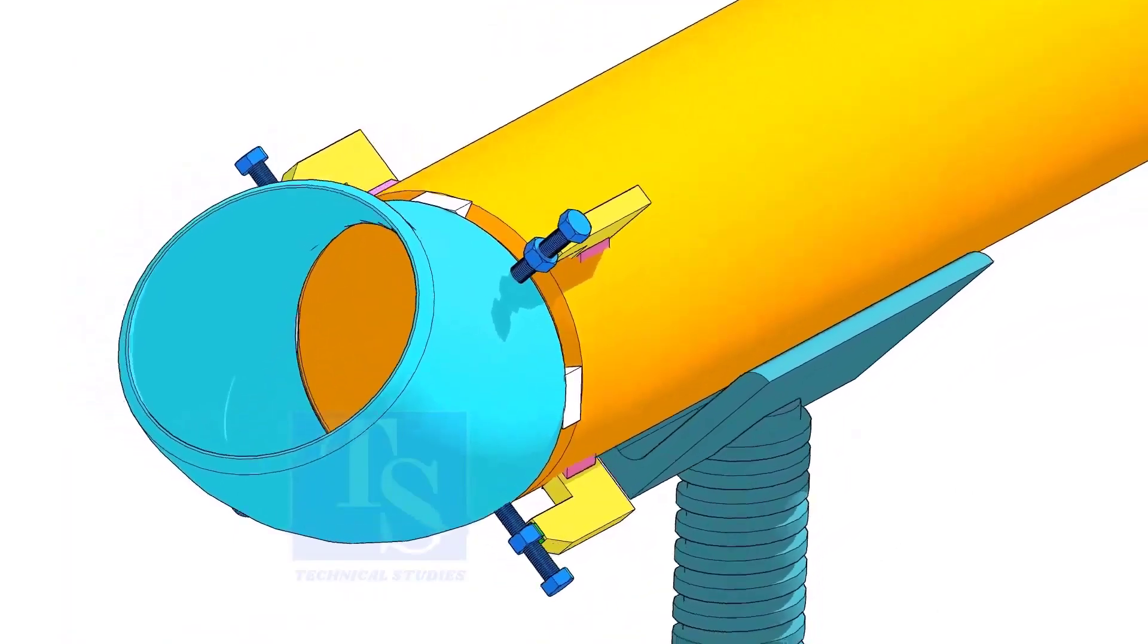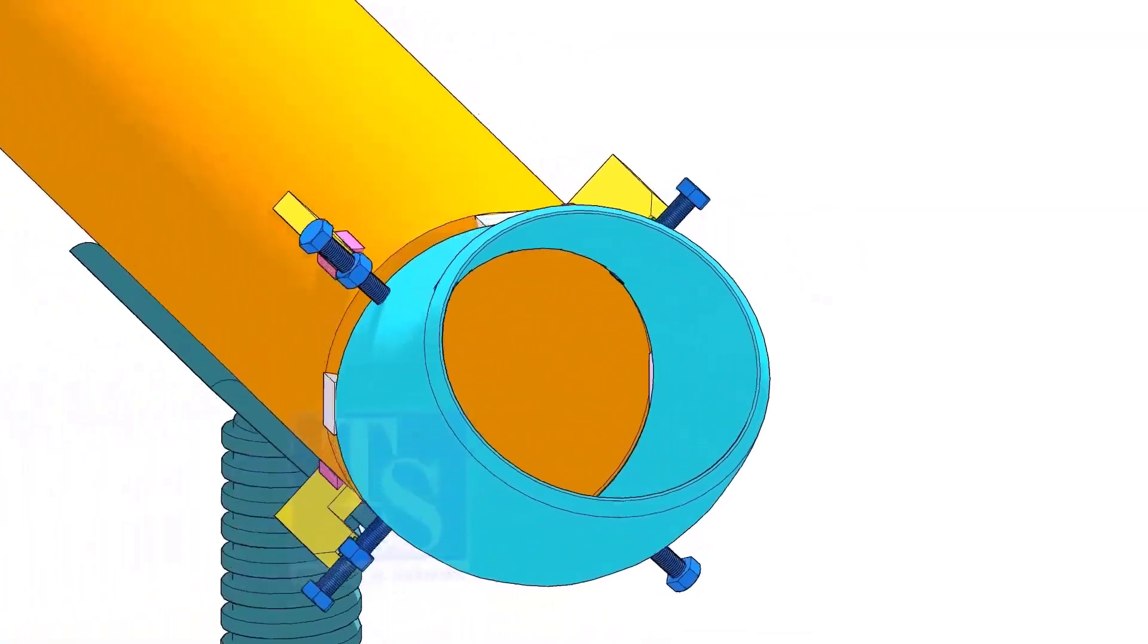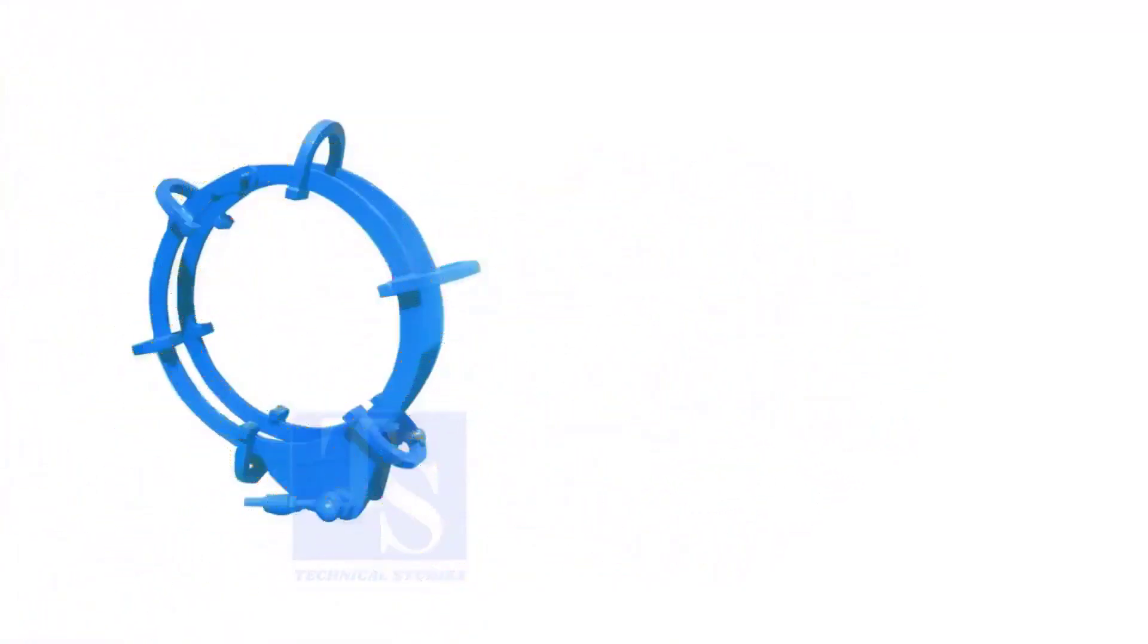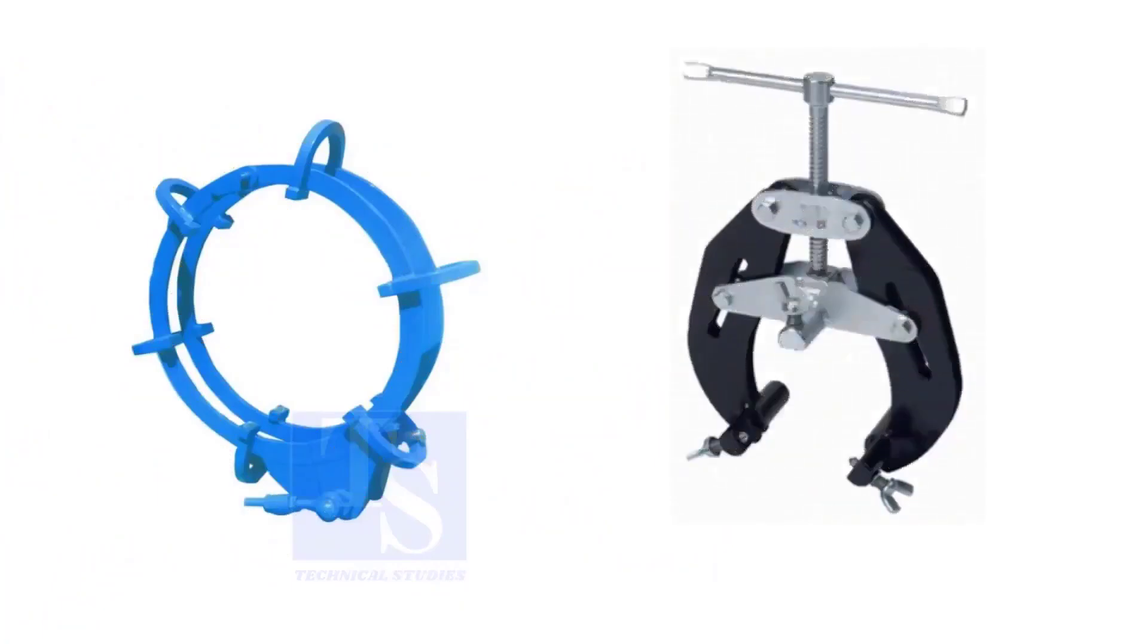Pipe aligning clamps are the most important tool for pipe fabrication, but are costly and need different sizes according to the size of the pipes. To overcome these disadvantages, we can use jack bolts. I will show you how to make a jack bolt.